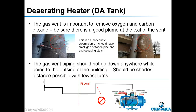The gas vent on the deaerator is how the gas escapes. You do not want long distances from the deaerator to the outside. You definitely don't want any downward turns, and if you have to make angles, they should be 45 degrees and not 90 degrees. It's very important to help get these gases out.